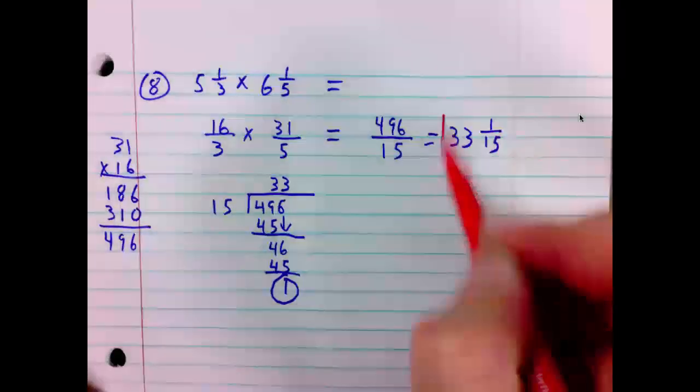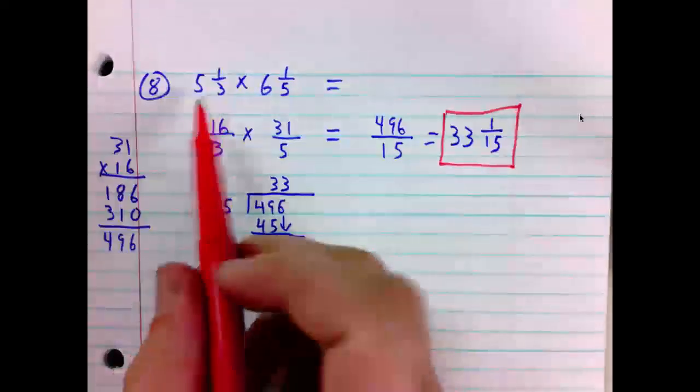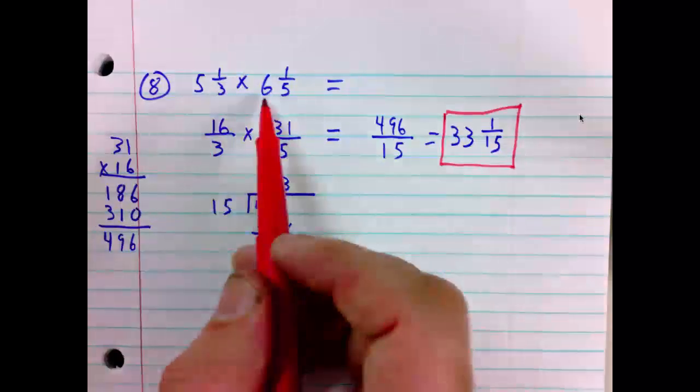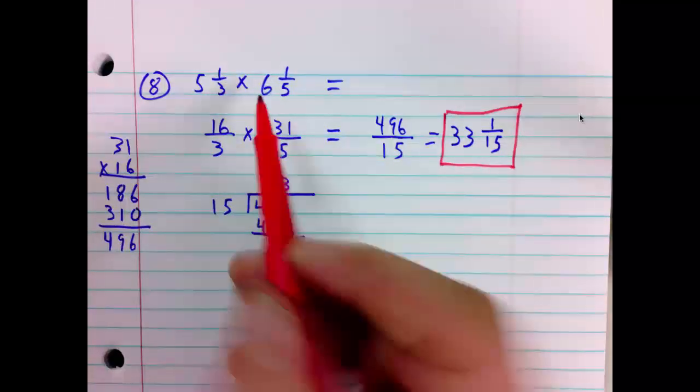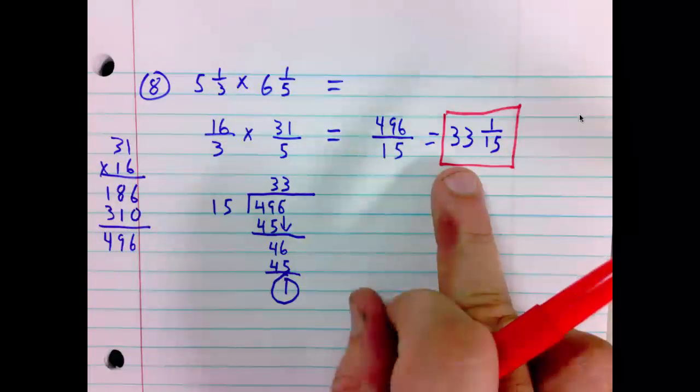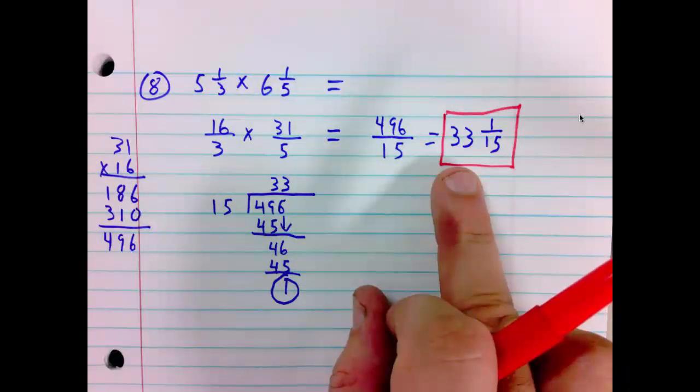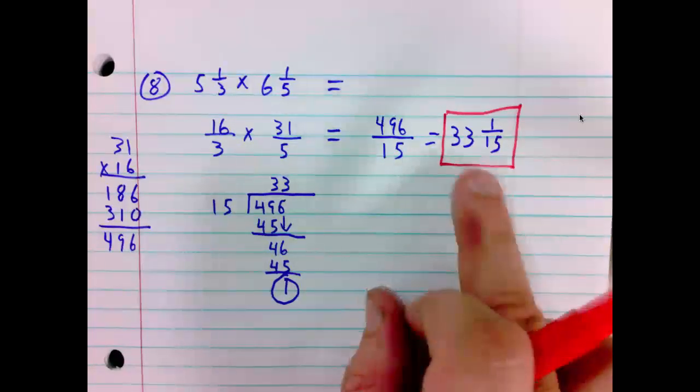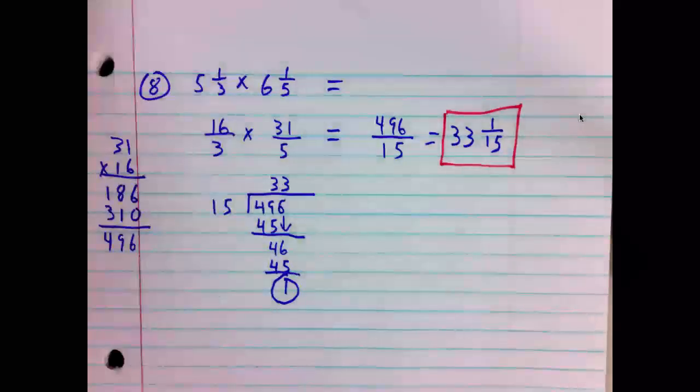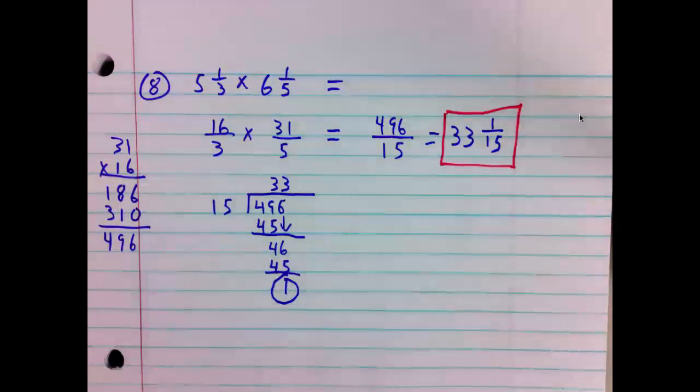Lastly, we will consider reasonableness. Our initial problem was 5 and a little bit times 6 and a little bit. 5 times 6 is 30. So we should suspect the answer is close to 30 but more. And 33, while I'm not sure if it is right, it is at least reasonable. 33 and 1 fifteenth should be in the ballpark. You are now ready to complete the rest of the problems for Tuesday, which would be 6 and 7.